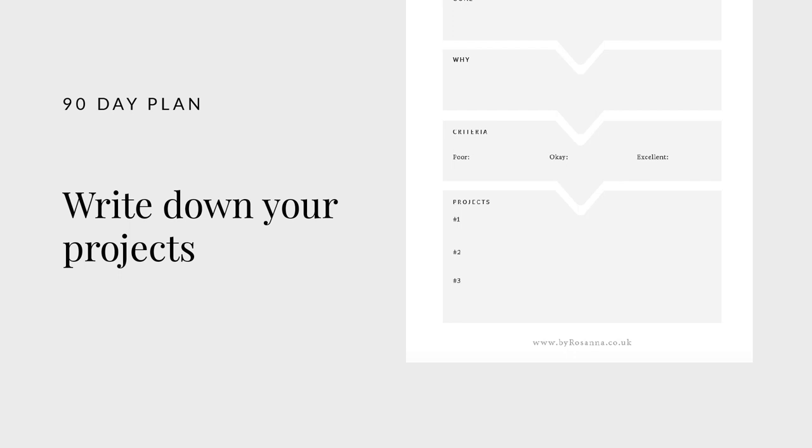Once you have your goal or goals written down, you then want to write down up to three projects that are going to help you achieve that goal — getting more specific about what needs to be done. For example, if your goal is to improve Instagram engagement, your projects might be: one, engage with more people on comments and DMs; two, create more valuable content for your grid posts; and three, show up on stories every single day with interactive content. Within those projects you'll have different action tasks to write into a calendar.